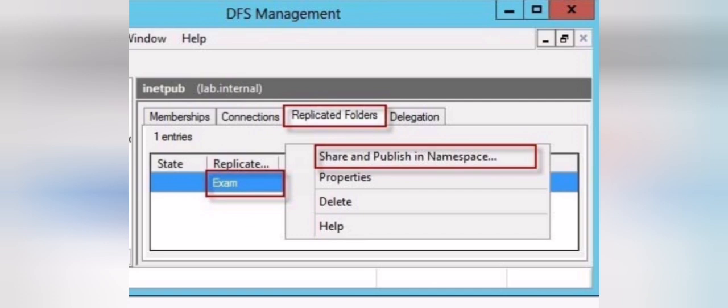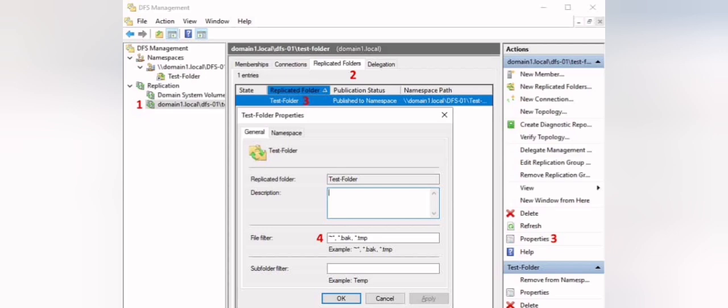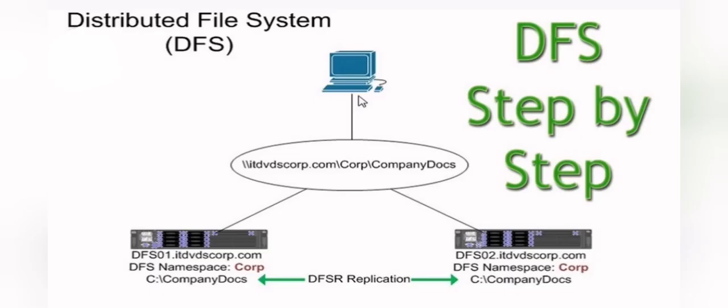After the replication configuration is done, you may share and publish the replicated folder in your namespace. You can also go to the replicated folder's properties and choose to filter certain file types you don't want replicated, and make any necessary changes to the namespace, topology, bandwidth, and schedule. This finalizes the DFS setup step by step. I hope it was clear enough. Please don't forget to like, share, and subscribe for more videos.